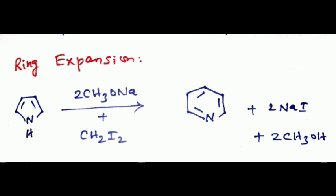Then ring expansion reaction. Pyrrole can be combined with sodium methoxide with diiodomethane to form pyridine with loss of sodium iodide and methyl alcohol.